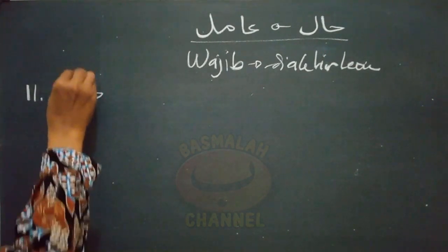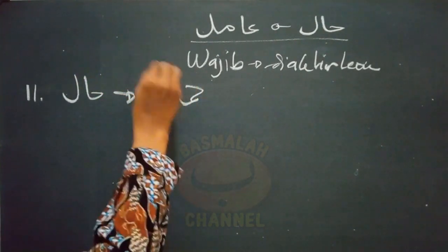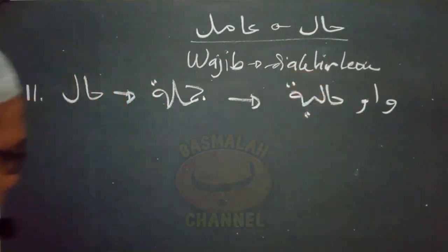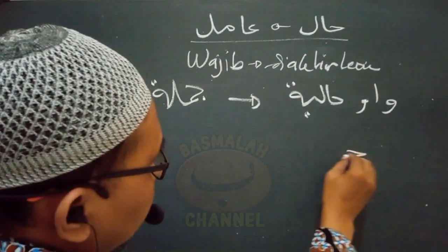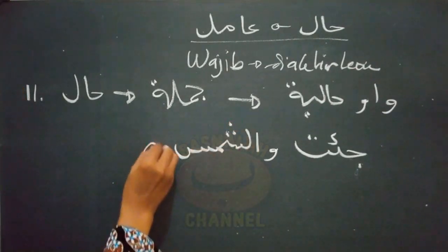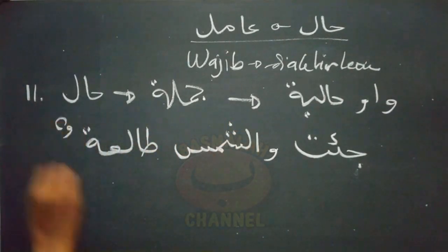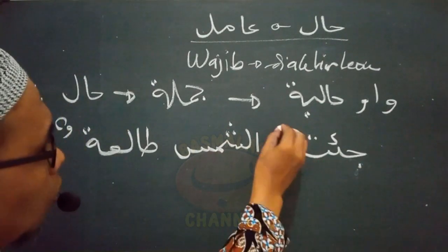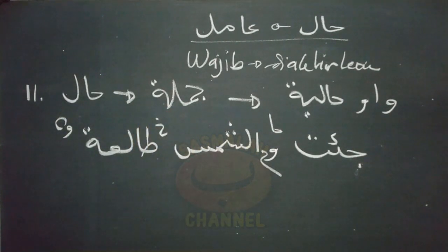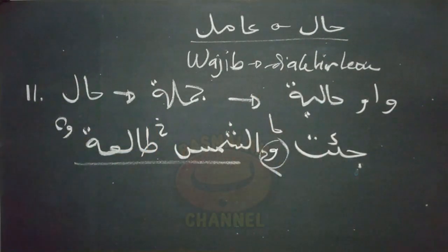Kondisi berikutnya adalah manakala hal berupa jumlah yang diiringi dengan wau haliyah. Maka dalam kondisi ini hal tidak boleh didahulukan dari amilnya. Contohnya seperti lafad 'ji'tu wa al-syamsu thali'atun': datang aku padahal adapun matahari iyalah terbit. Di sini halnya berupa jumlah yang diiringi dengan wau haliyah. Maka di sini tidak boleh didahulukan dari amilnya yang berupa lafad 'ji'tu'.